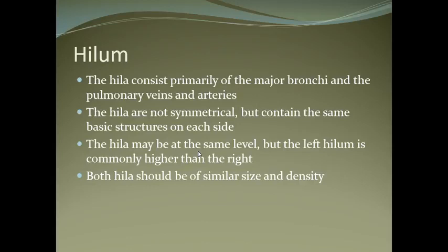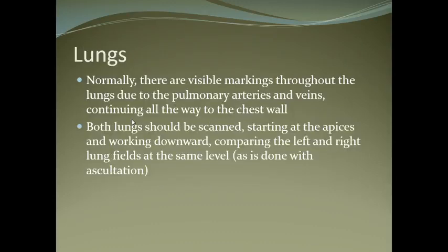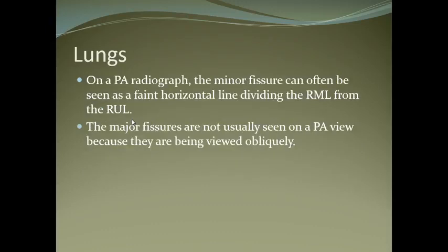The left hilum is usually higher than the right, but both should be of similar size and density. Lungs show vascular markings throughout, due to pulmonary arteries and veins, continuing all the way to the chest wall. Both lungs should be scanned from the apex downward, comparing left and right at the same level. The minor fissure can often be seen as a faint horizontal line dividing the right middle lobe from the right upper lobe. The major fissures are not usually seen on the PA view because they are viewed obliquely.